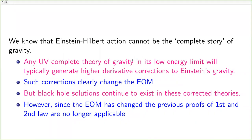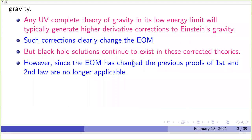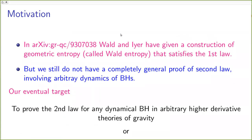Such corrections change the equation of motion because the action changes. Black hole solutions continue to exist in these corrected theories, at least perturbatively, but since the EOM has changed the previous proofs of first and second law are no longer applicable. In higher derivative theories — which will generically appear for any UV completion of gravity — black hole solutions still exist, but the previous identification of thermodynamic quantities with geometric quantities is no longer valid.